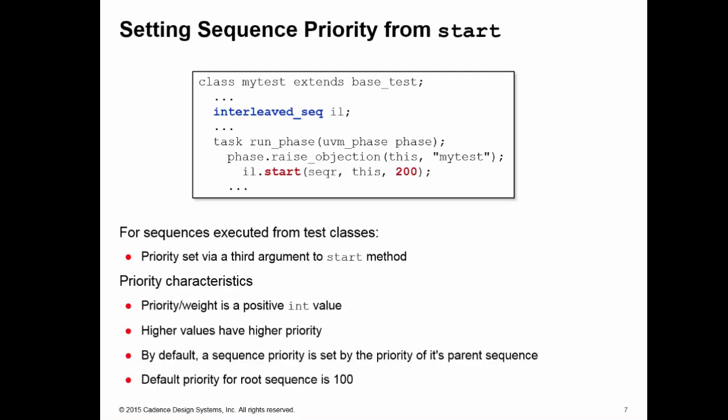A quick word about priority characteristics. The priority weight is a positive integer value, and higher values have higher priority. If you don't set the priority of a given sequence or item, it inherits the priority of its parent sequence, and the default priority for a root sequence is always 100. Normal Verilog rules apply, so the most local priority is the one that overwrites any higher settings and affects the local sequence or item. Now we know how to set priority, we can look at the arbitration mechanisms that use these settings.